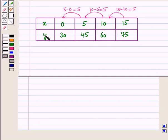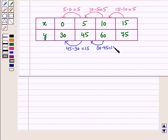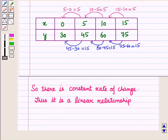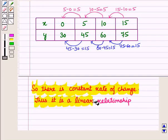Now let us see the change in output values given by y. We can see that 45 minus 30 is 15, 60 minus 45 is also 15, and 75 minus 60 is again 15. Thus y is increasing by equal differences, so there is a constant rate of change. This confirms it is a linear relationship.